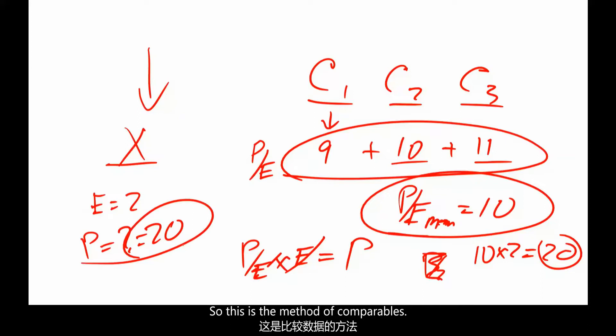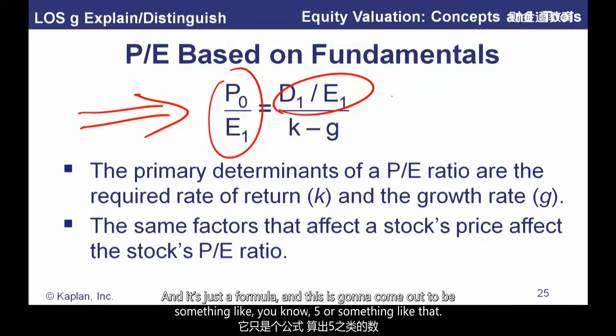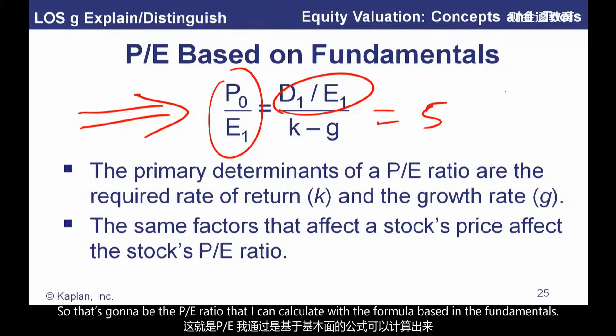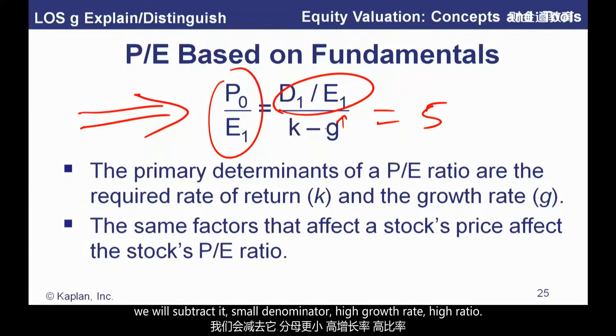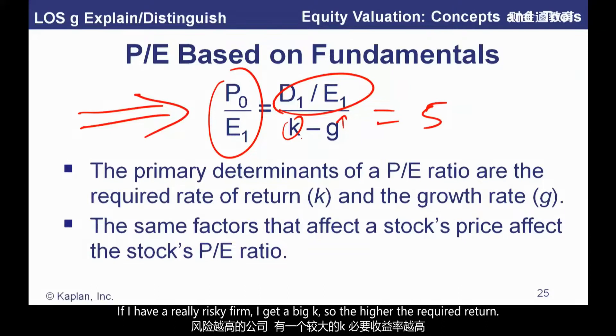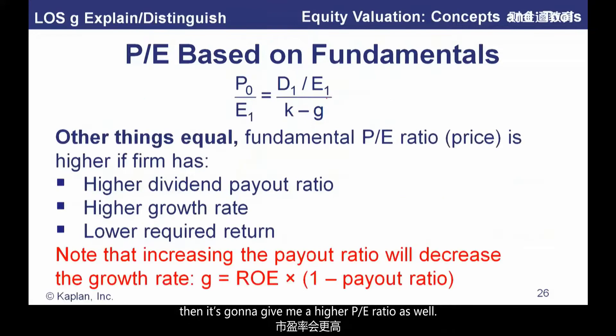The P/E formula based on forecasted fundamentals equals the leading dividend yield divided by K minus G, giving a P/E ratio you can calculate from fundamentals — payout ratio, cost of capital, and growth rate. Higher growth rate means a small denominator and high P/E ratio. A really risky firm has a big K, giving a low P/E ratio. Higher payout ratio, all else equal, gives a higher P/E ratio as well. However, be careful: increasing the payout ratio decreases the retention ratio, which under the sustainable growth formula (G = ROE × retention ratio) would decrease the growth rate — potentially making the overall impact on P/E indeterminate.